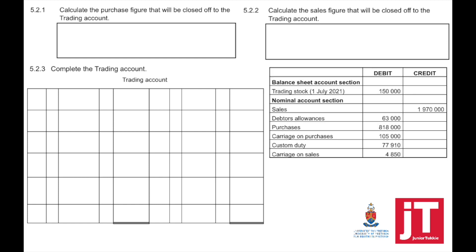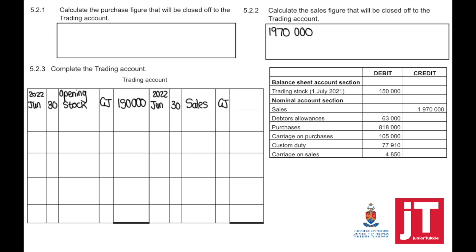Follow these steps: we start with the figures from the pre-adjustment trial balance. Remember that you always need to show your calculations in brackets to earn part marks. If your final answer is correct you get full marks, but if your final answer is wrong and you didn't show any calculations, you lose all the marks. The first step is looking at the balance sheet account section — trading stock on 1 July 2021. This will always be your opening stock, which is closed off to the trading account. For the nominal account section, sales — we need to calculate the sales figures, so sales will appear in your trading account but we first need to calculate it in 5.2.2.